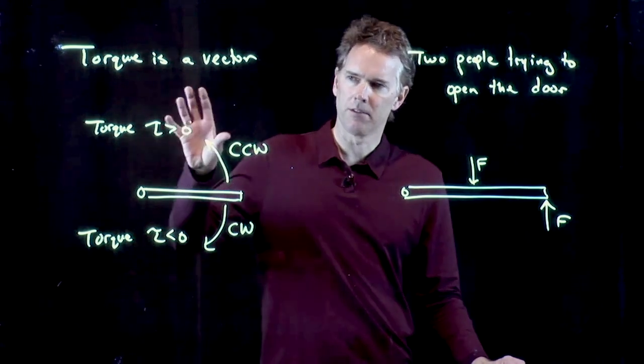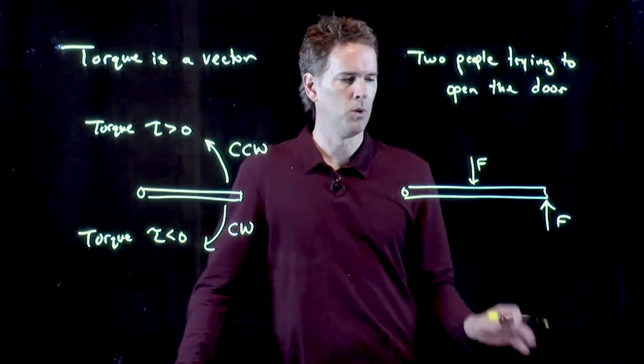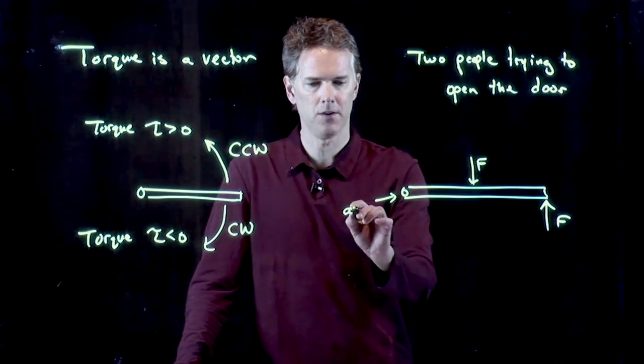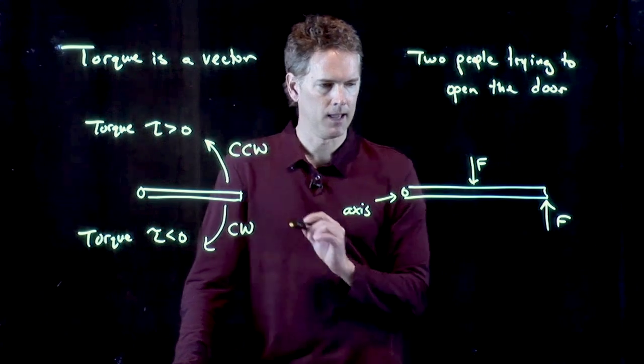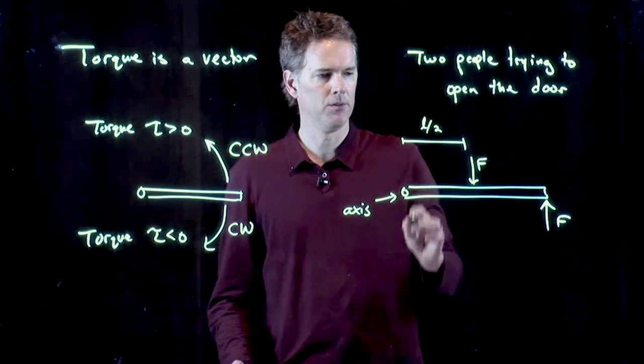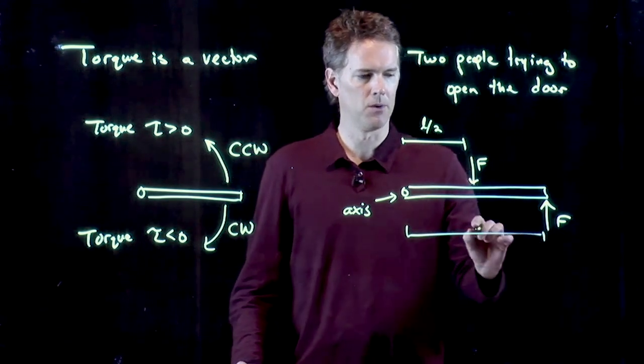Let's see if, based on this sign convention, we can figure out who's going to win. This is our axis of rotation, where the hinge is. And let's say that this length here is L over 2, and the whole length of the door is L.